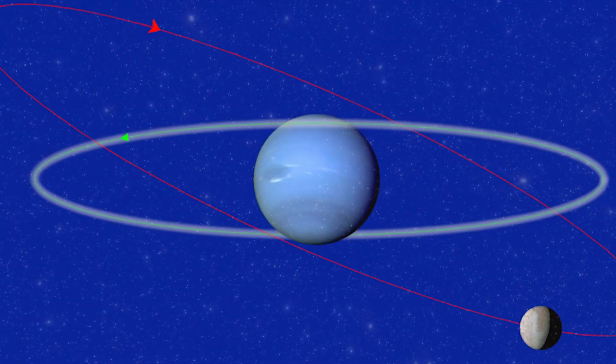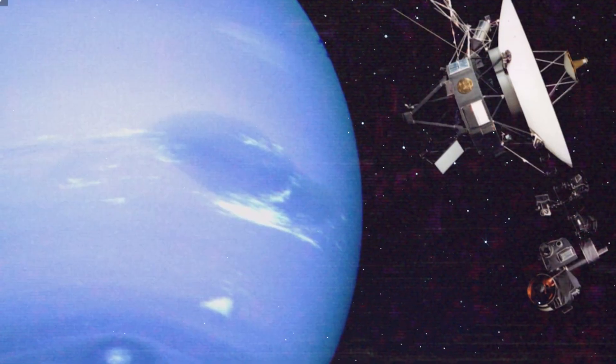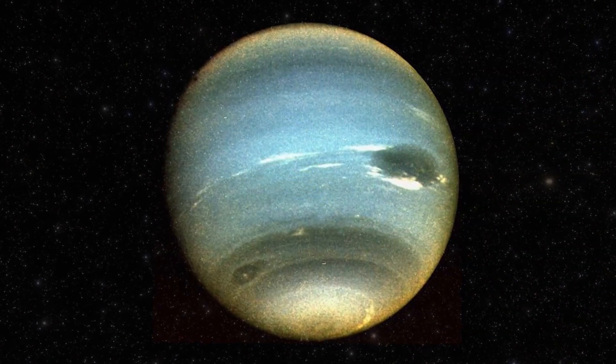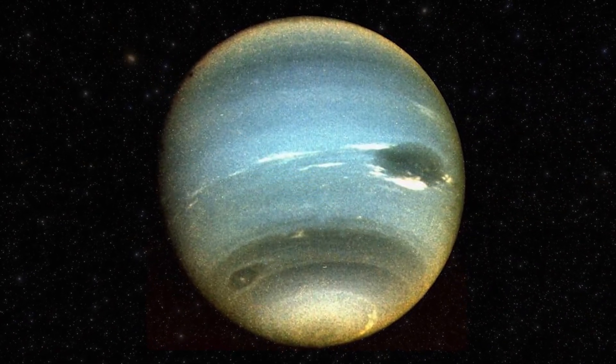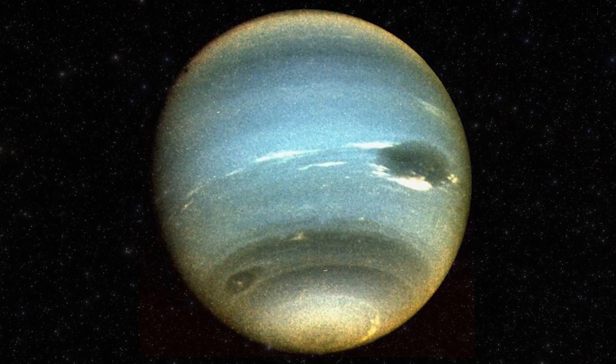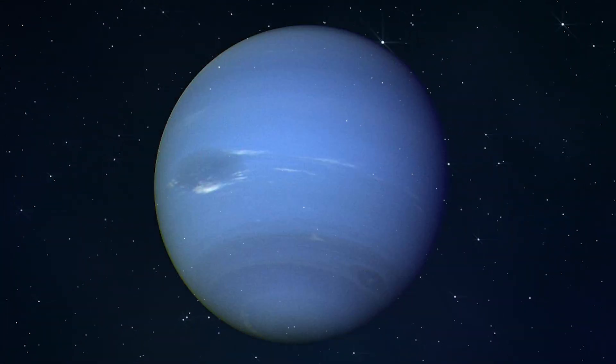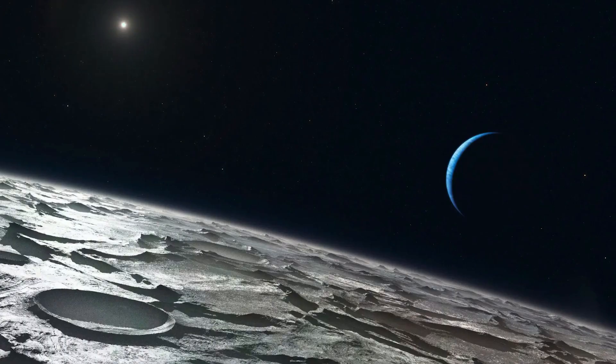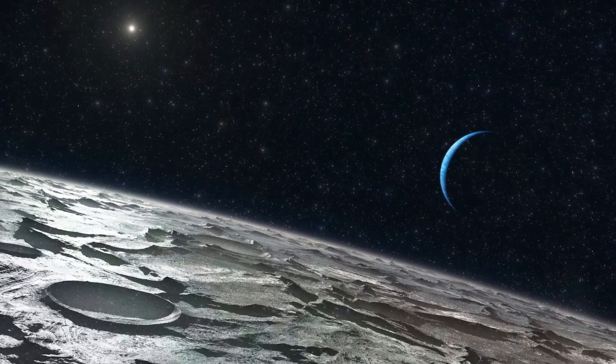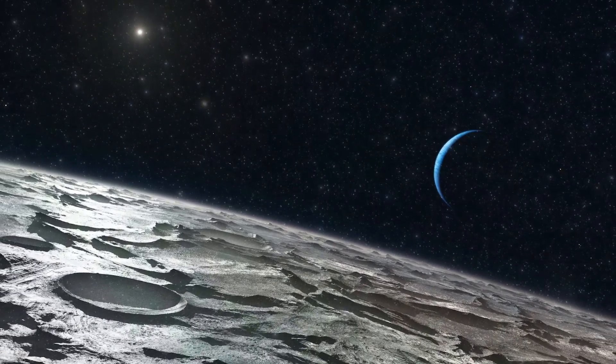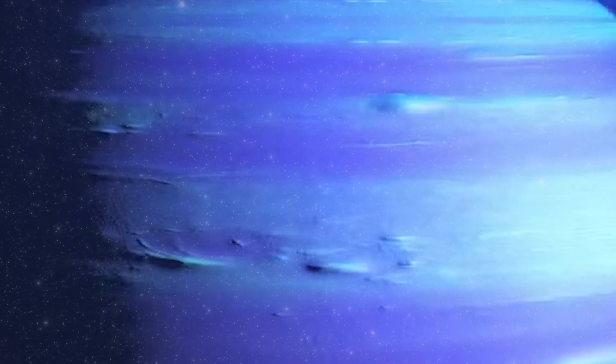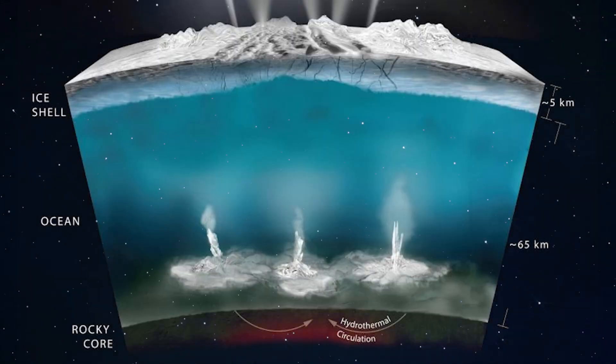Triton's peculiarities don't end there. Images taken by the Voyager 2 spacecraft in 1989 unveiled its extraordinary mosaic-like surface, adorned with plumes and craters. Scientists estimate that the surface could be between 10 million to 100 million years old. They also observe smooth regions, suggesting the presence of cryovolcanism and possibly a subsurface ocean. The presence of plumes and depressions akin to lake basins further support the hypothesis of a subsurface ocean.